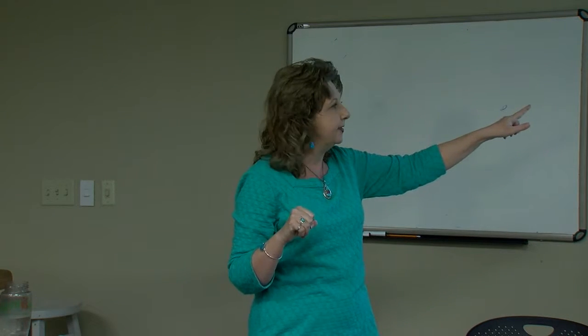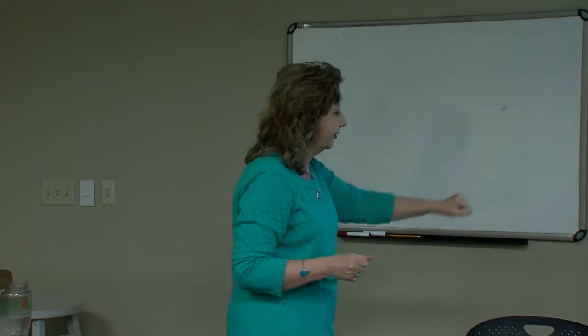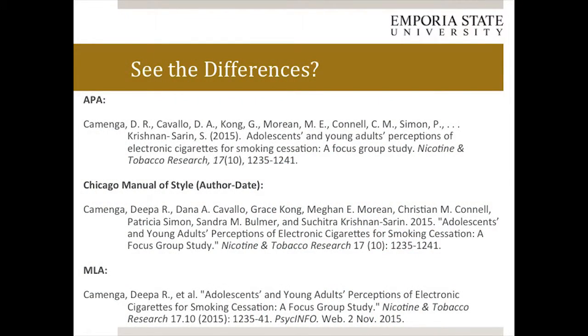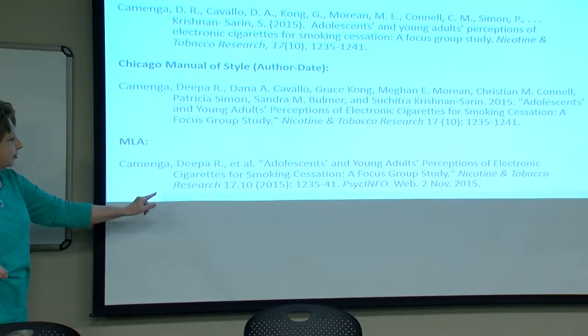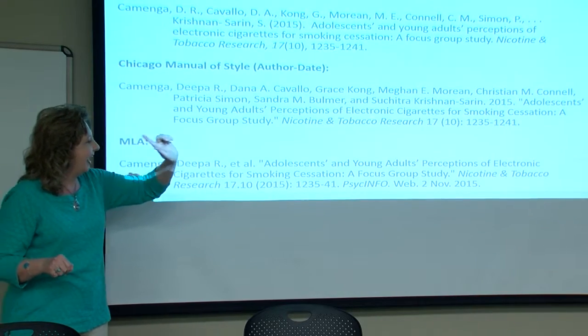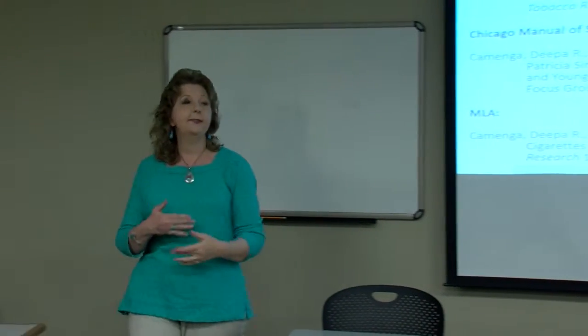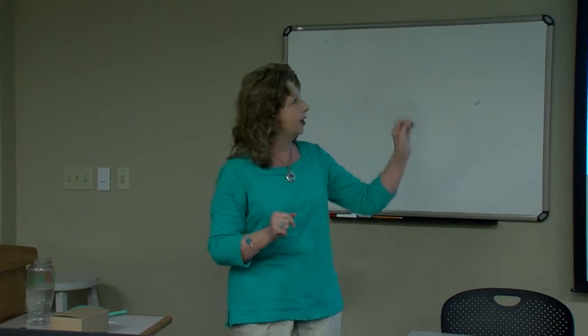The Chicago Manual of Style, often used in the social sciences such as history and philosophy, also lists author names followed by the year of publication right after. MLA is a little different: we have the authors' names, then the title of the article, the title of the journal, the volume, the issue, and then finally the year of publication. That's because MLA is for humanities disciplines — in the humanities we're not necessarily as concerned with when something was published; we're more concerned with the actual information, such as a critical review of an author or a novel.